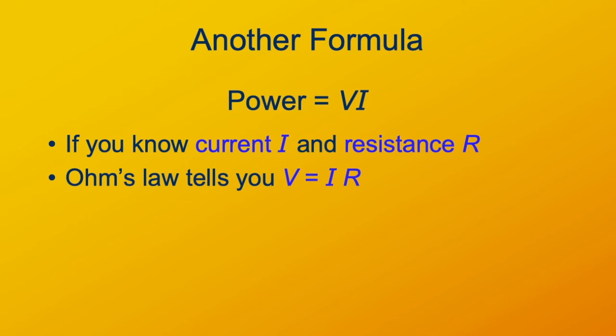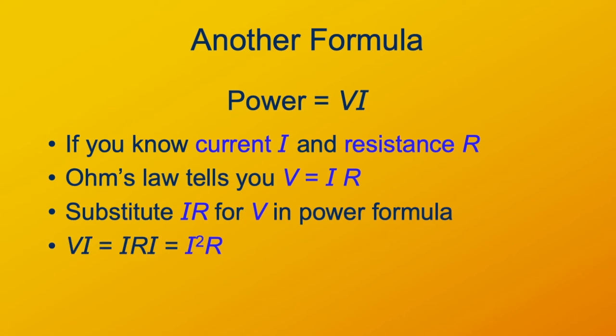We want to get rid of the V part, so we'll just substitute in I R, where V shows up. And so, that gives us V equals I squared R.